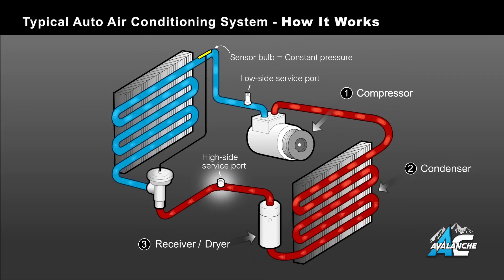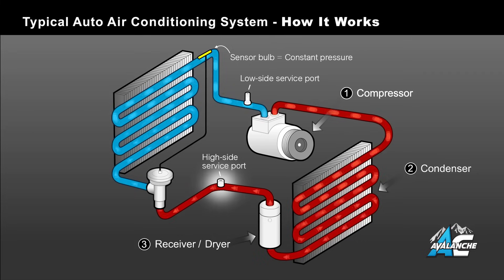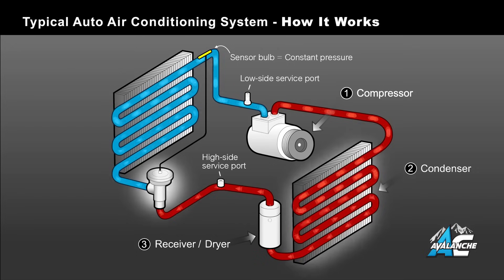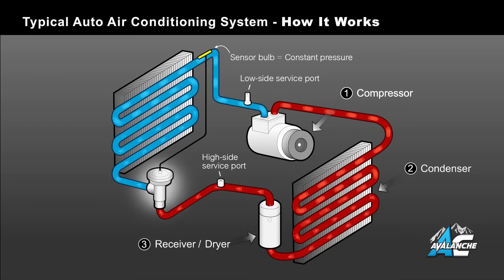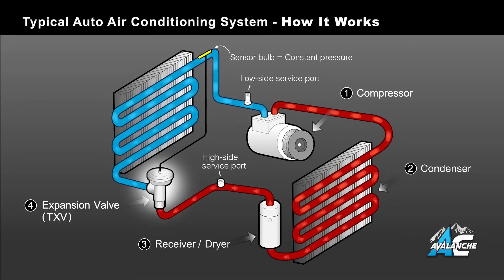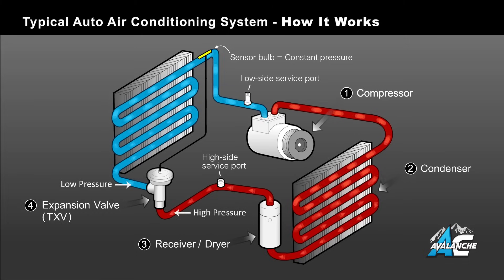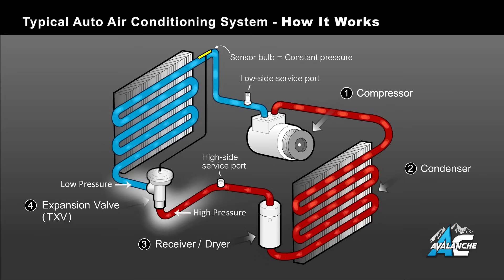The high-side service port is located here, between the condenser and the expansion valve or orifice tube. Next, this high-pressure liquid passes through the expansion valve, allowing it to expand and turn into a low-pressure liquid, as indicated in our color change from red to blue.